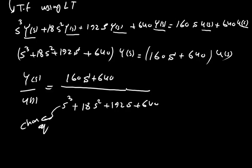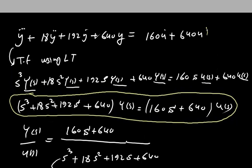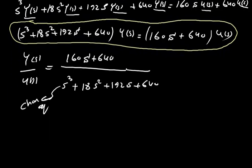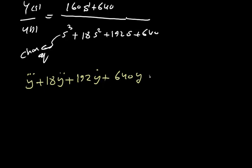This is the transfer function, and the denominator is the characteristic equation. Now I need to focus on the original differential equation, which is: y‴ + 18y″ + 192y′ + 640y = 160u̇ + 640u.